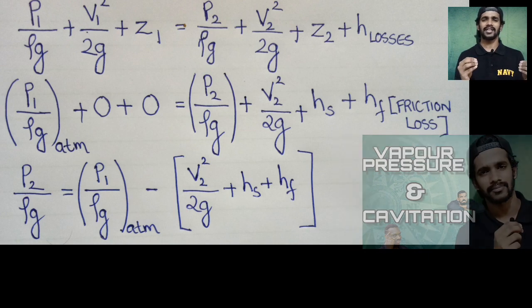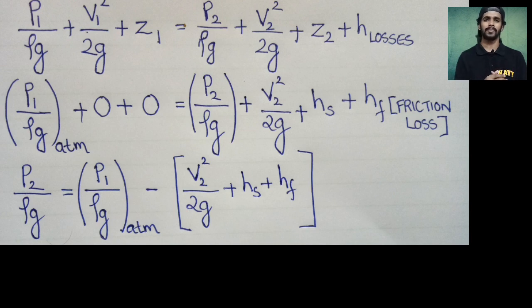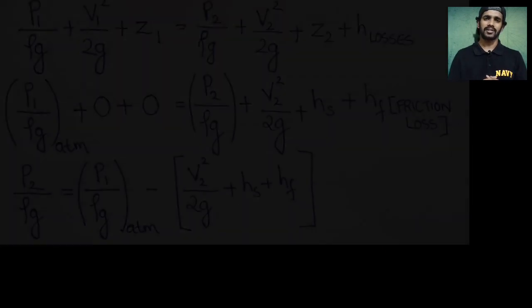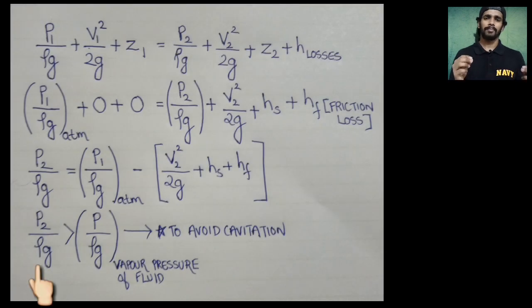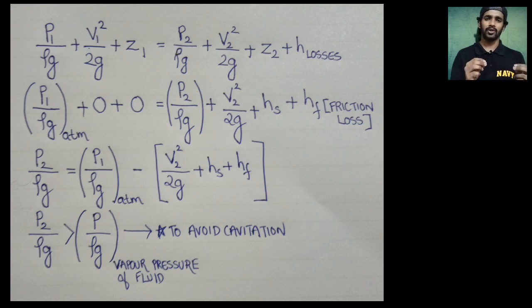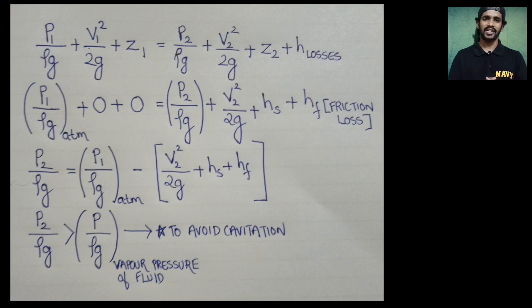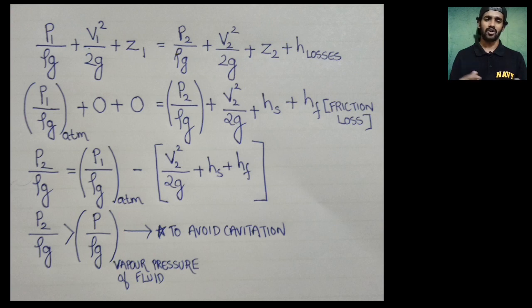As discussed in our cavitation video, the pressure at the eye of the impeller must be less than atmospheric pressure, but it should not be so low that it becomes less than the vapor pressure of the fluid — because if that happens, cavitation will occur. We modify the equation: P2/ρg must always be greater than Pvapor/ρg, the vapor pressure of the fluid. This condition is essential to avoid cavitation.